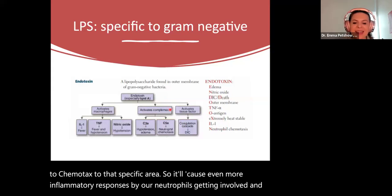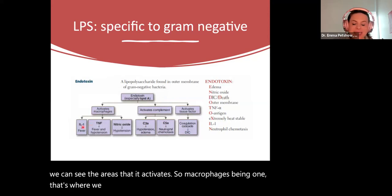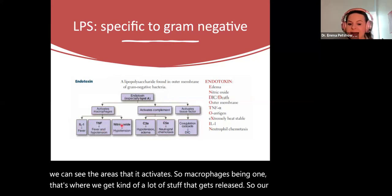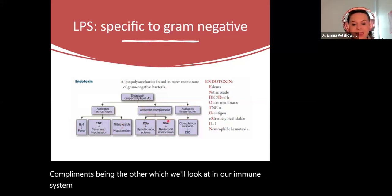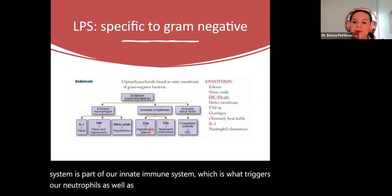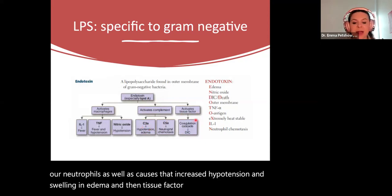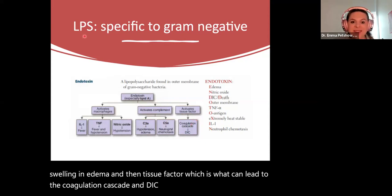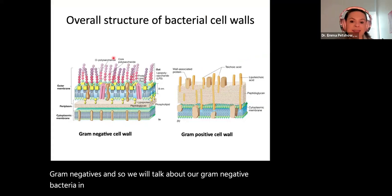LPS activates macrophages, which release inflammatory cytokines and nitric oxide. It also activates complement — part of our innate immune system — which triggers neutrophils and causes increased hypotension, swelling, and edema. Tissue factor activation can lead to the coagulation cascade and DIC. So LPS does a lot that's specific to gram negatives, and we'll discuss gram negative bacteria in our next slide set. We're going to focus on gram positives first.